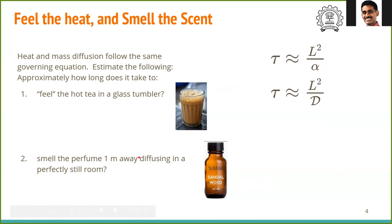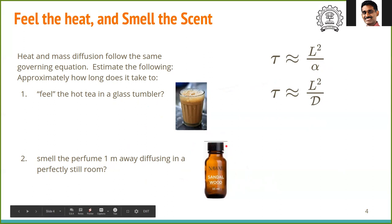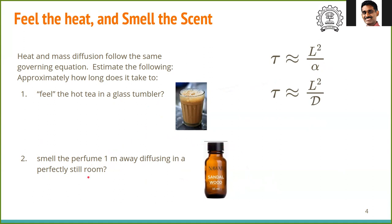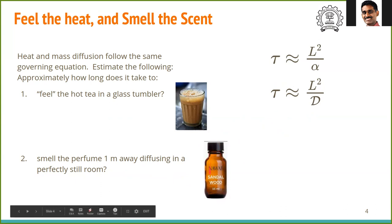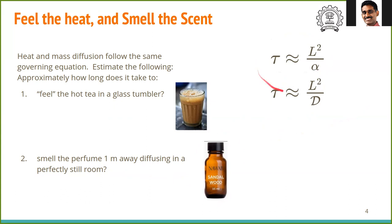The second problem: a perfume bottle is opened and placed one meter away. Assuming the room is perfectly still with no convection — pure diffusion only — estimate how long it takes for the perfume to reach you. The time scale is again τ ~ L²/D, where L = 1 m and D is the diffusivity of the perfume molecules (or you can use the diffusivity of air as an approximation).